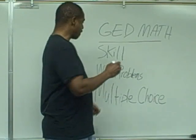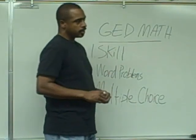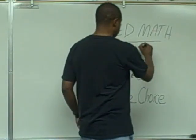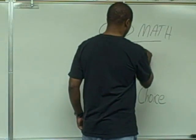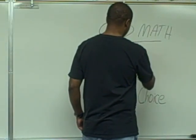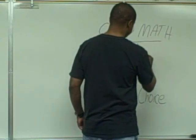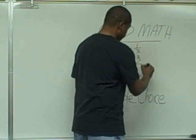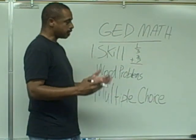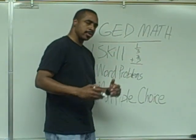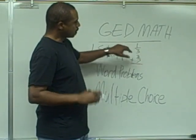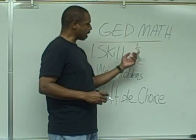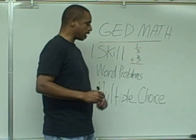The first area I want to talk about is the skill area. For example, with fractions you simply need to be able to do the skill of 1/3 plus 3/7. That's the skill, but on the GED test this is not what you're going to see — they're not going to test you on your ability to do that directly.